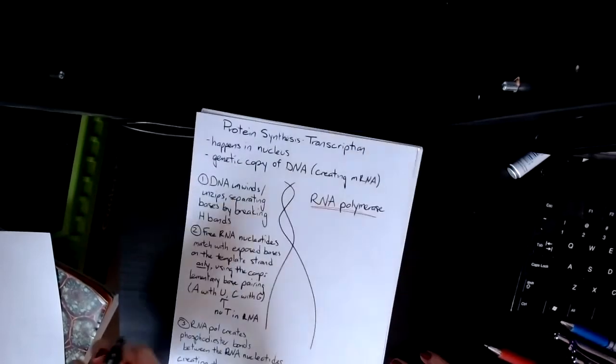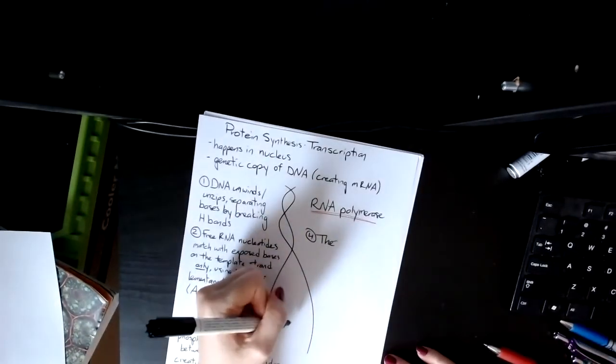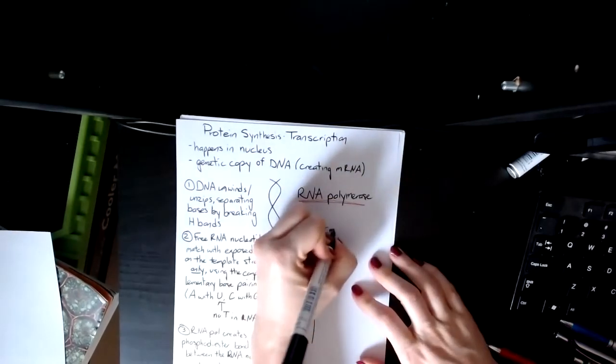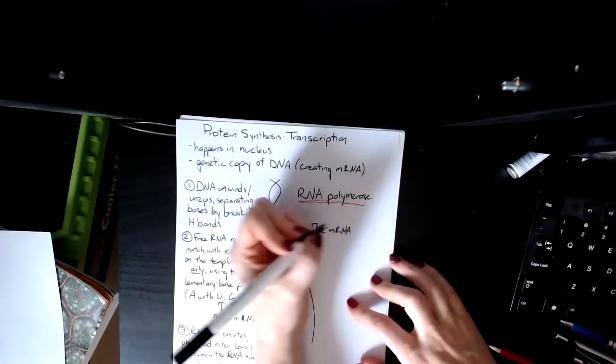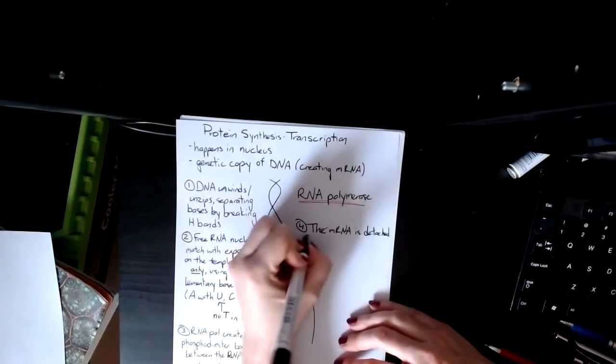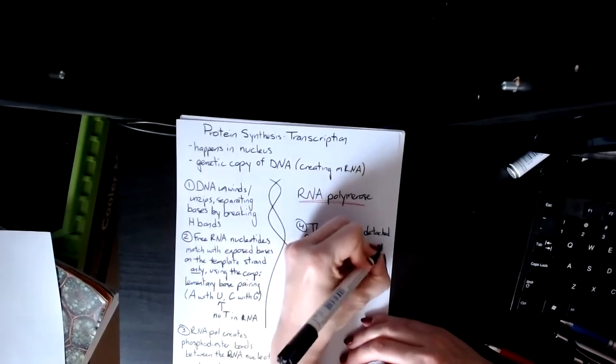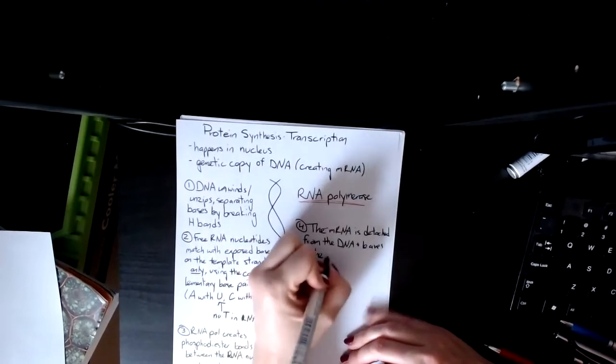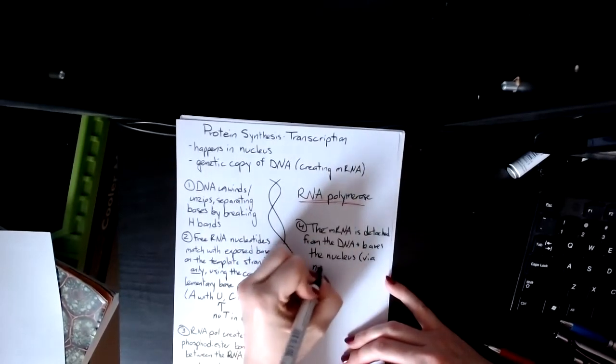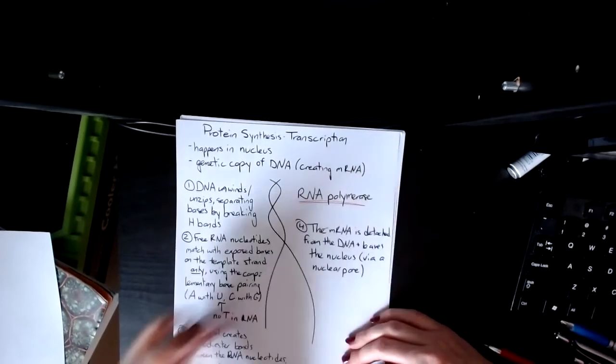As a final thing, the idea is that the mRNA then dissociates from the DNA, and that's also a difference from DNA replication. So the mRNA is detached from the DNA and leaves the nucleus. If you want to say via nuclear pore you can do that. That is the final step of transcription.